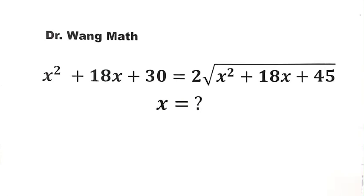In this video, we're going to solve an equation from the AMC. x squared plus 18x plus 30 equals 2 times the square root of x squared plus 18x plus 45.